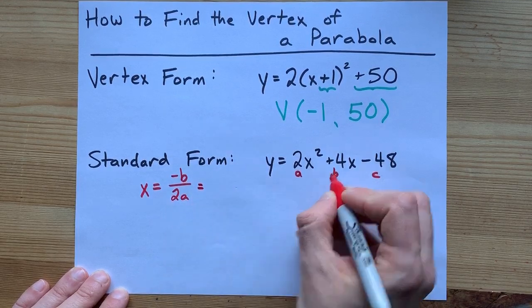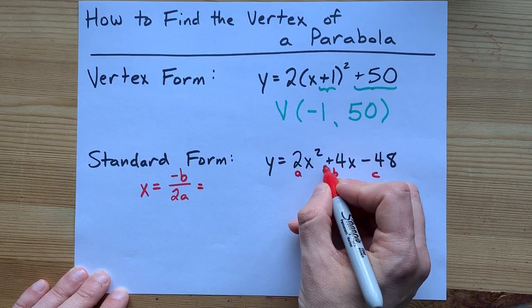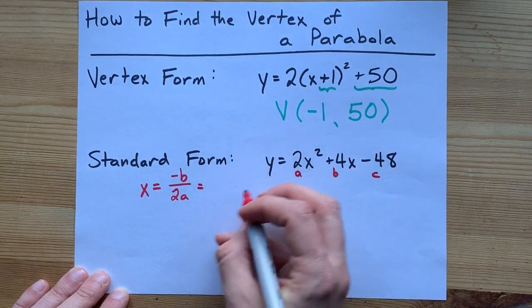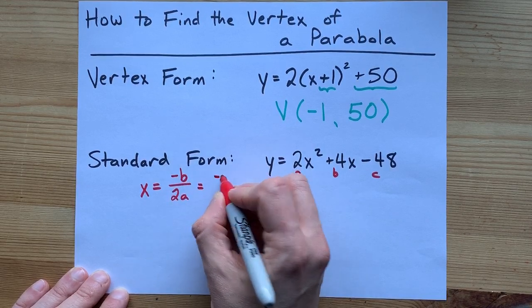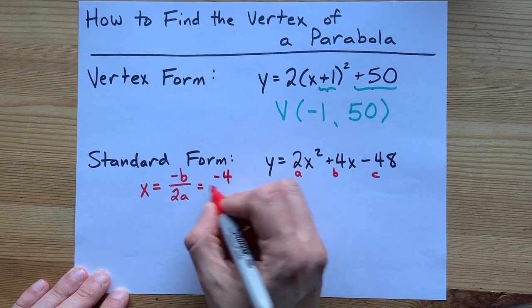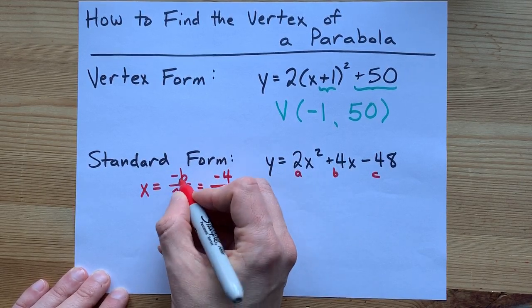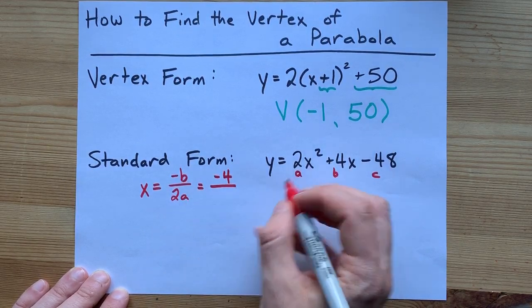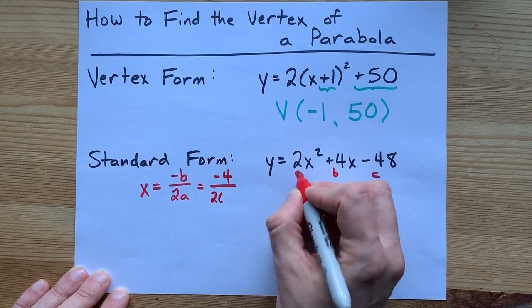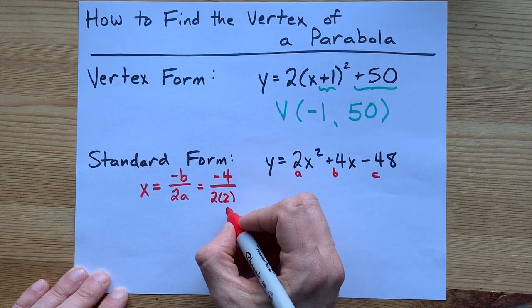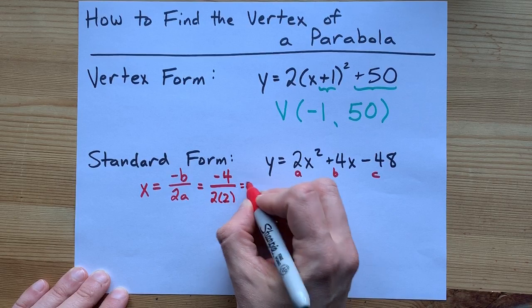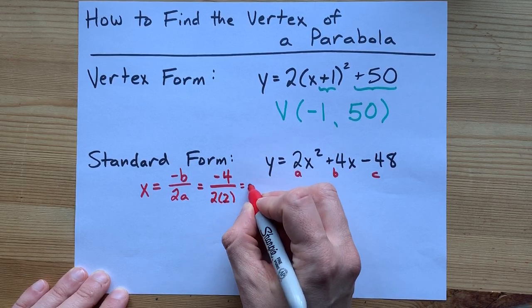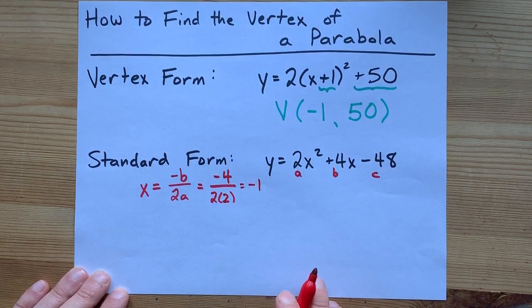So, my b is positive 4. See, it says plus 4. So, my b that goes in here is negative 4. Notice the negative here was in the formula. Next, we have 2 times a. That's 2 times 2. And so, I end up with negative 4 divided by 4, which is negative 1 on my calculator.